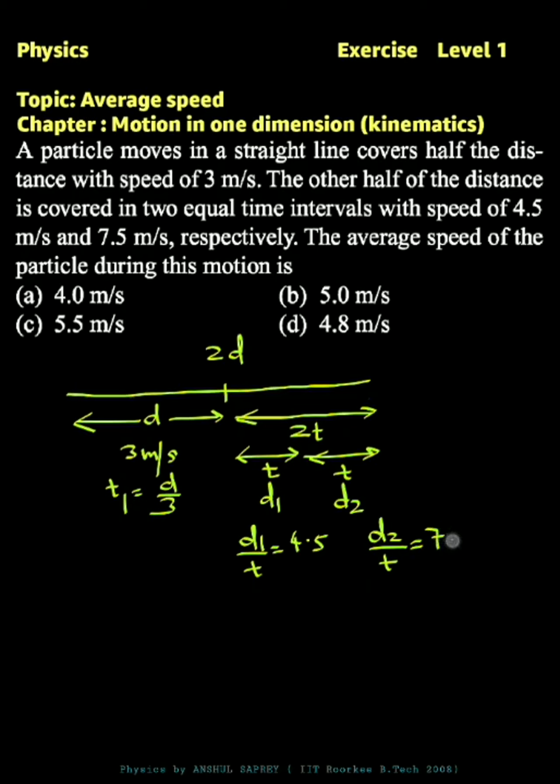So we can say d1 is equal to 4.5t and d2 is equal to 7.5t. And we know that d1 plus d2 is equal to d. So d is equal to 4.5t plus 7.5t, which is equal to 12t.